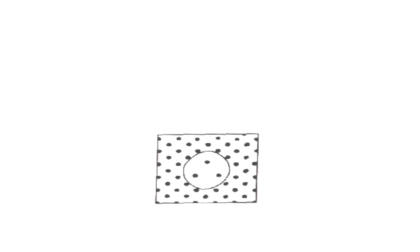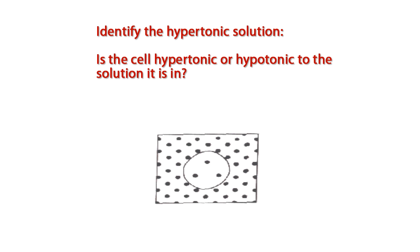Let's look at an example. The first step is to identify the hypertonic solution. Assume that the dots in this diagram are sodium ions in a water environment.